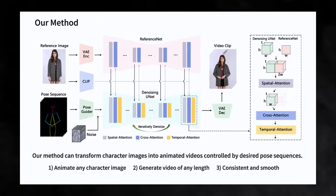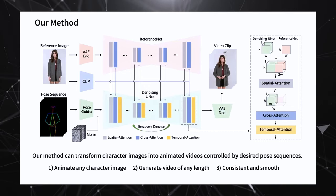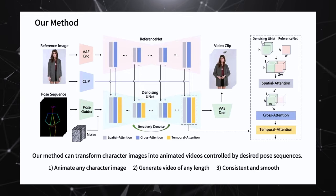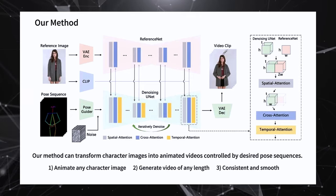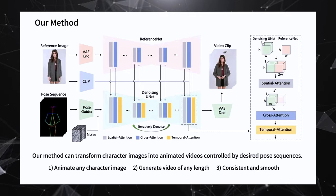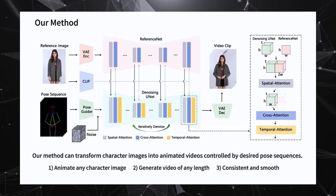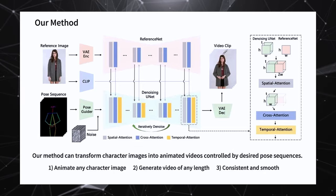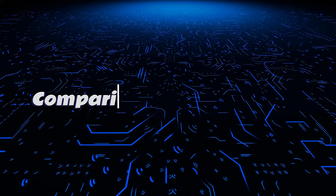This method creates realistic videos by first understanding and encoding body poses using PoseGuider. To enhance realism, a reference image contributes detailed features via reference net and contextual understanding through the CLIP image encoder. The temporal attention component adapts to changes over time.